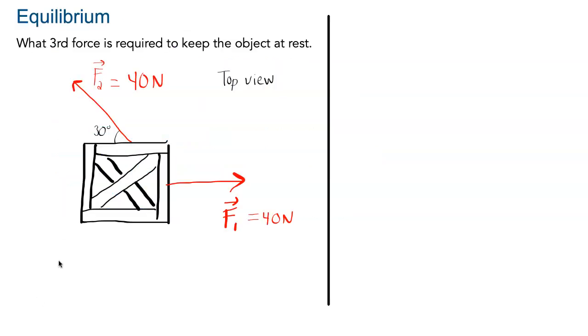So let's use an example to explore these ideas. Here we have a crate that is on the ground. We're looking at it from above, so this is the top view. There are two forces that are acting on the crate, both of 40 Newtons. The question is what third force is required to keep the object at rest.